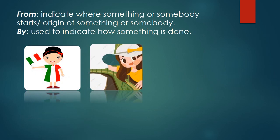Next, 'from' and 'by.' 'From' indicates origin — for example: 'I am from Italy.' It represents the origin of somebody. 'By' is used to indicate how something is done — for example: 'The girl is going home by train.' How is she going? By train.